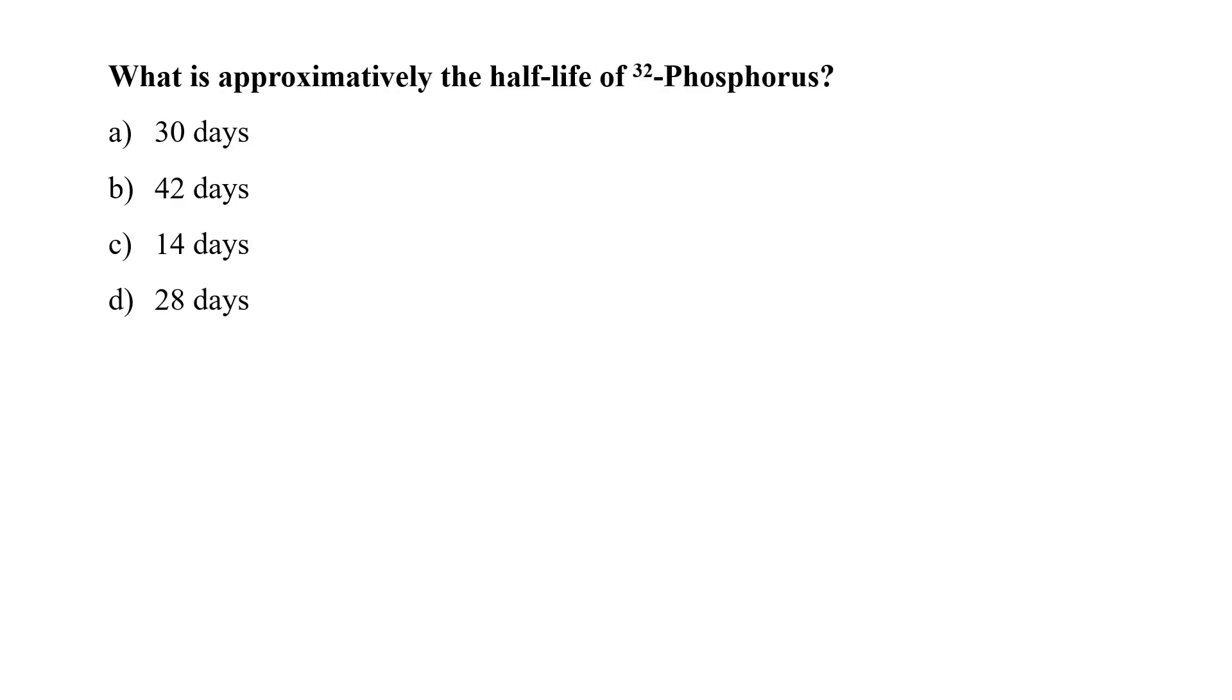What is approximately the half-life of P32? 30 days, 42 days, 14 days, or 28 days? P32 disintegrates by emitting a beta-negative particle with a half-life of 14.263 days. That means option C would be close to correct.